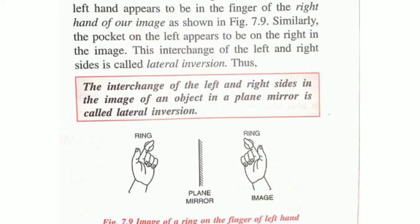The next topic is lateral inversion — the easiest one. Lateral inversion means if you put a t-shirt in front of a mirror, for example the word 'Physics', it appears reversed. That is lateral inversion: a change of the left and right side.